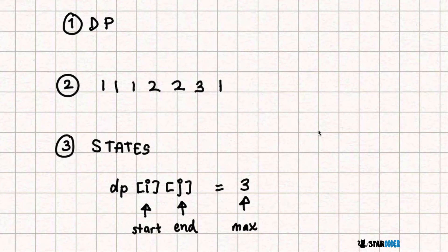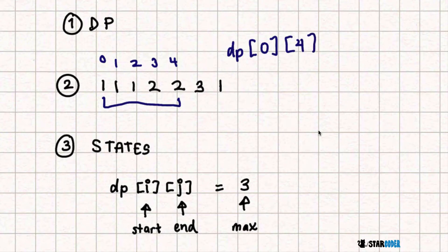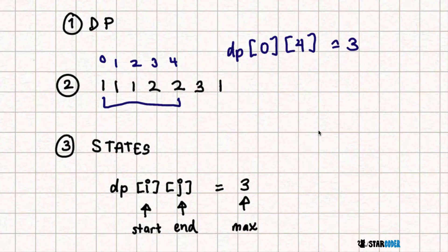With an example here, what we're going to do is create a two-dimensional DP. The first dimension is going to be the start — so this is a range of numbers, and the first dimension is the starting index. The second dimension is the end, in this case index four. What this value represents is the maximum number we can create from that range. If you just do it by hand, you could probably guess that the maximum number we could create is three.